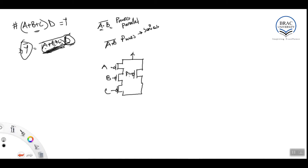If d is zero, this PMOS opens up, vdd is connected to the output, and the output equals one. Again, if d is one, that path is open, so we have to turn on a, b, and c all together. Since they are in series, if d equals one, then a, b, and c all have to be zero for the output to be connected to vdd through this path.